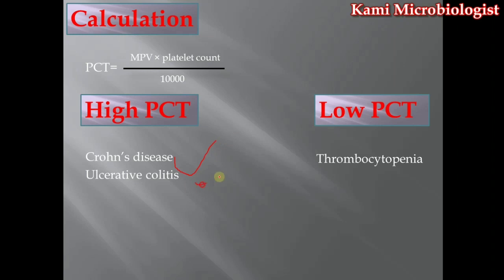The second cause of high PCT is ulcerative colitis, which is inflammation of the small intestine, large intestine, and rectum. When these portions become inflamed, internal bleeding occurs in that area, causing a high ratio of platelets, which also causes PCT to get high.